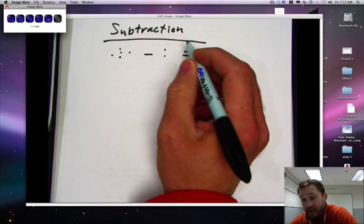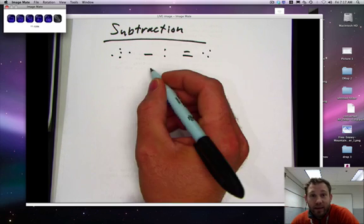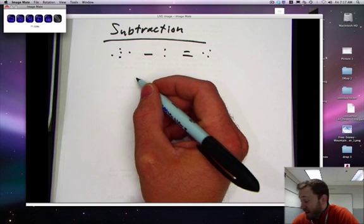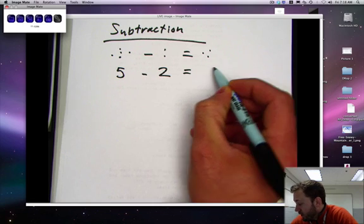So when I take five and I subtract two, I get three dots. Five minus two equals three.